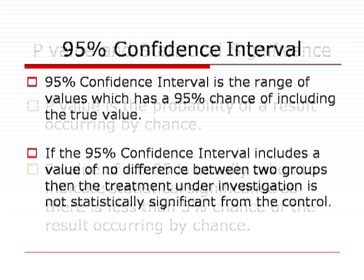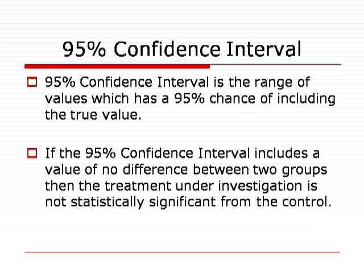And what is the 95% confidence interval? The 95% confidence interval is the range of values which have a 95% chance of including the true value. If the 95% confidence interval includes a value of no difference between the two groups, then the treatment under investigation is not statistically significant from the control.